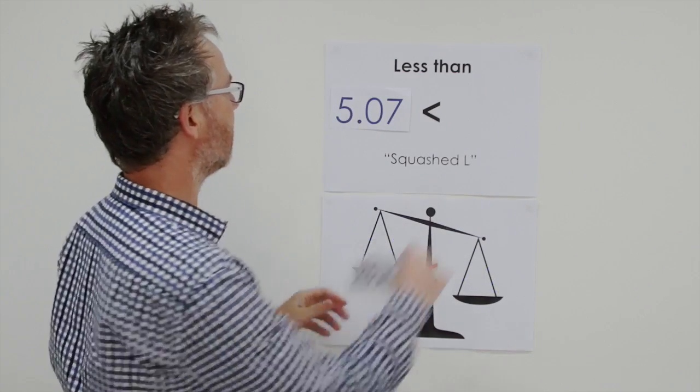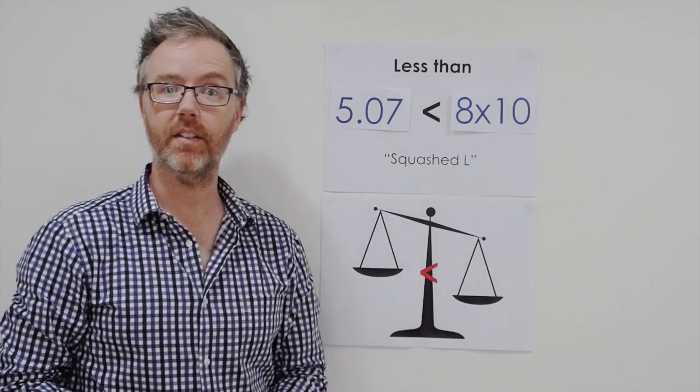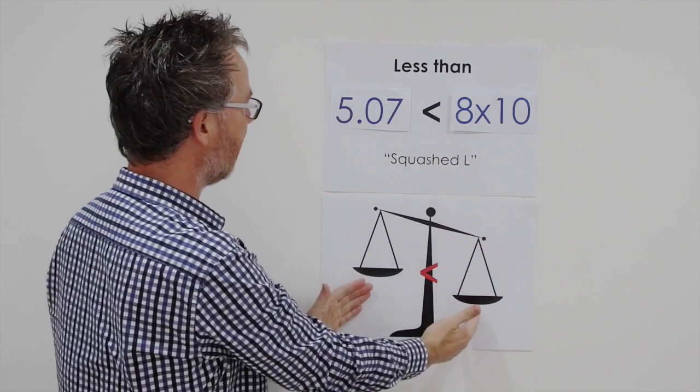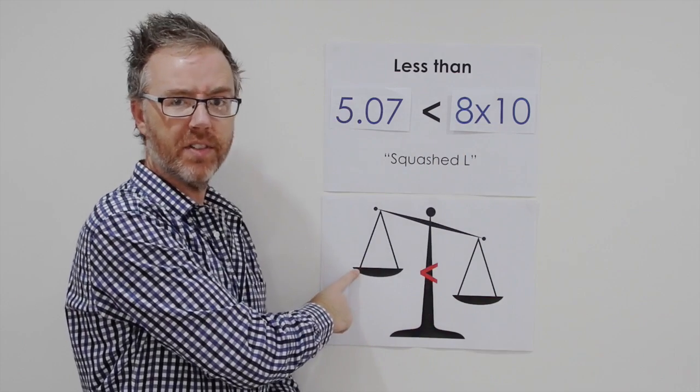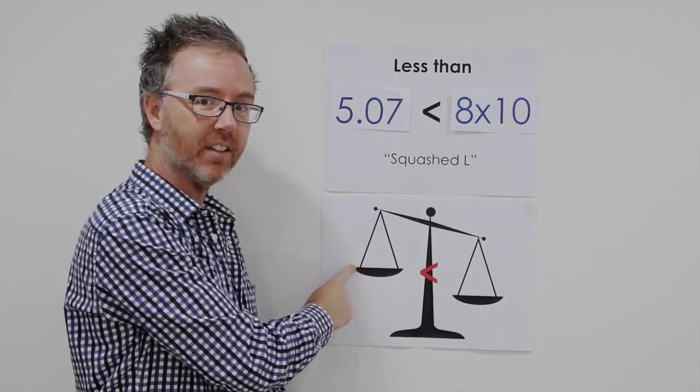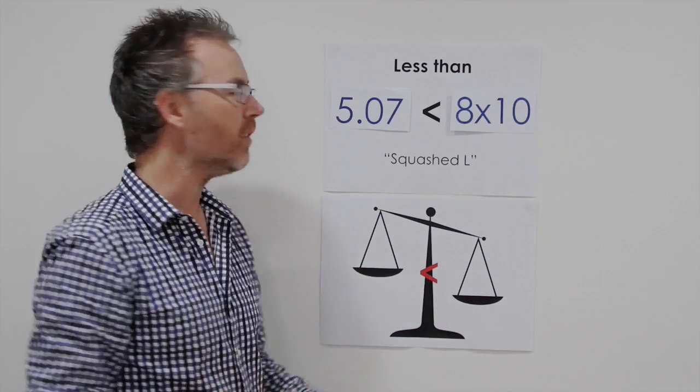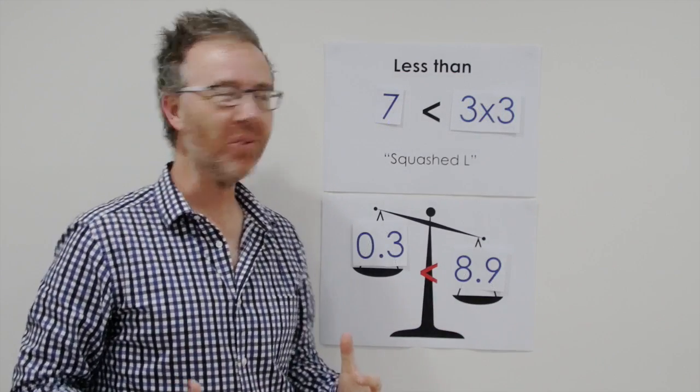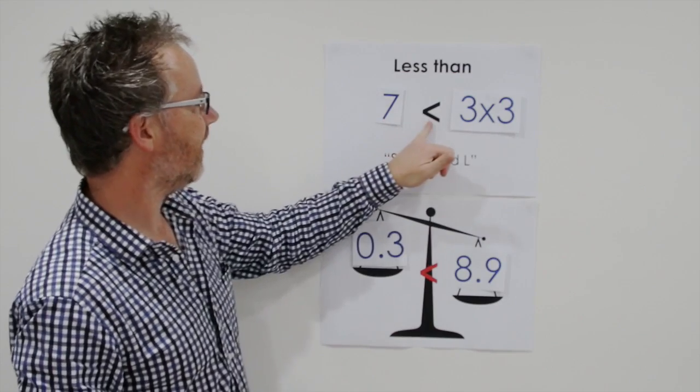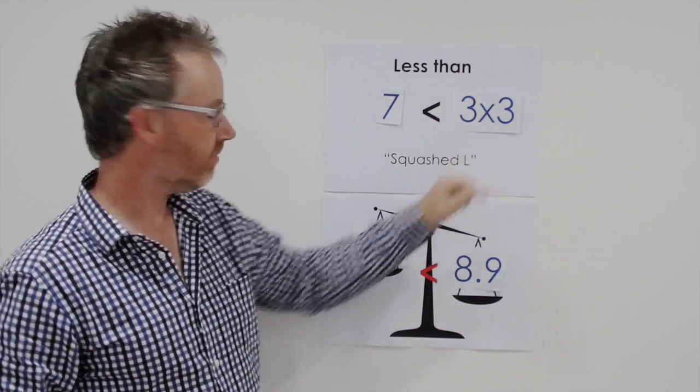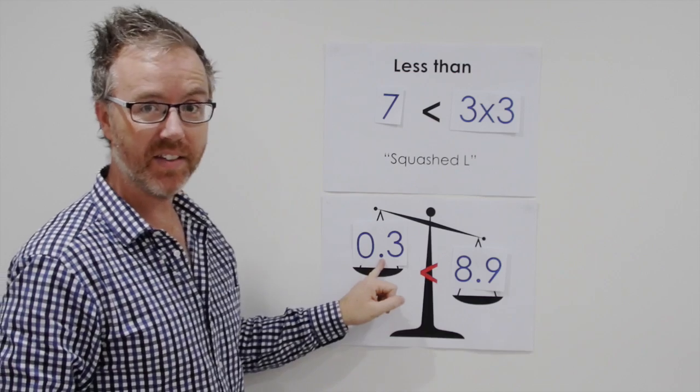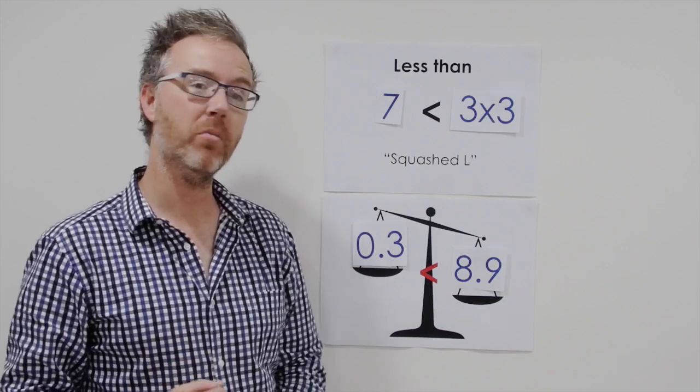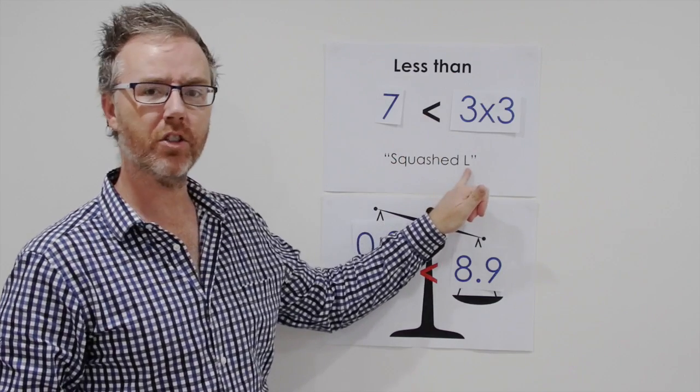Five and seven hundredths is less than eight tens. Five and seven hundredths is less than 80, and of course if we bring it down here, five and seven hundredths is definitely less - it's lighter if it were mass, say grams or kilograms, than 80. And the last two: seven is less than three threes which is nine, and three tenths is less than eight and nine tenths. So please remember everybody, less than is our squashed L.